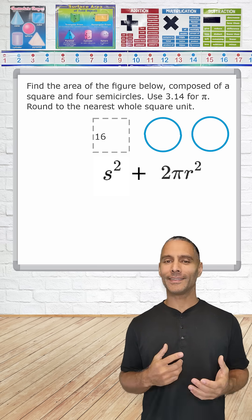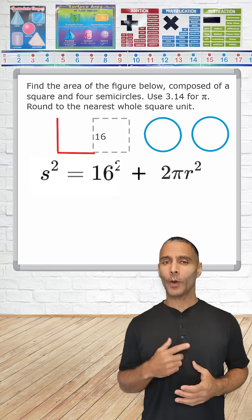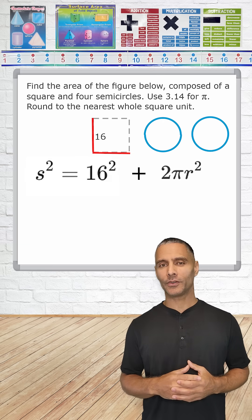So starting with the square we can see that the length of each one of its sides is 16. Squaring 16 gives us an area of 256.